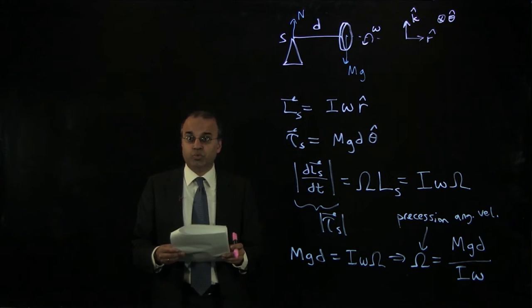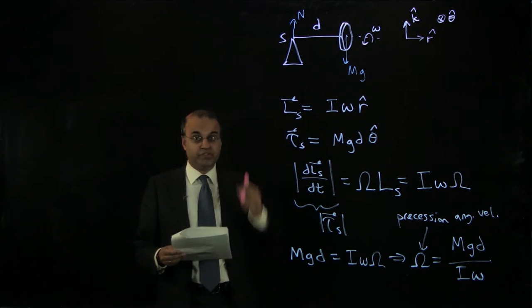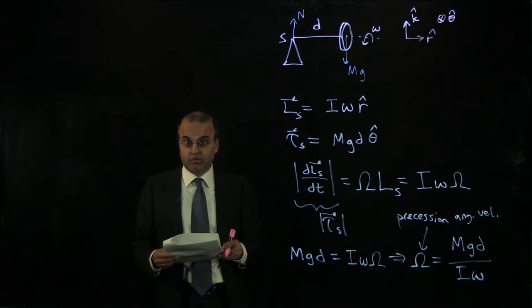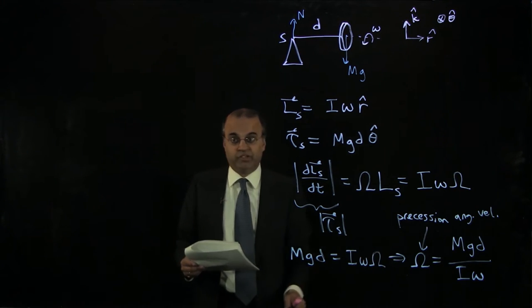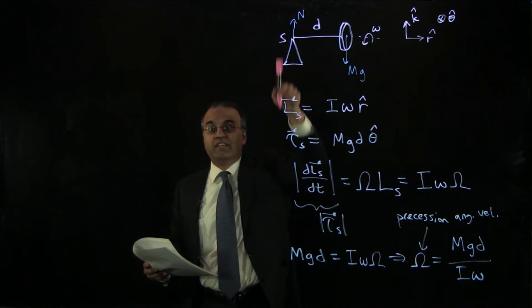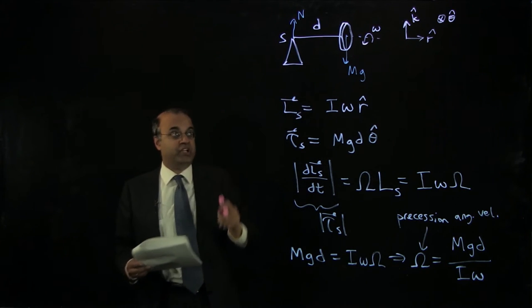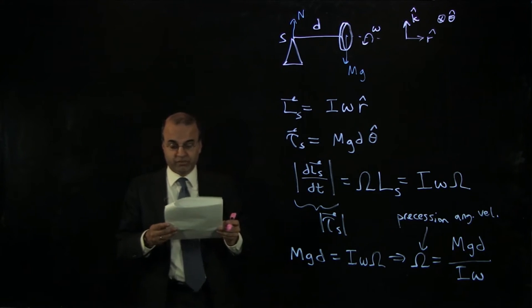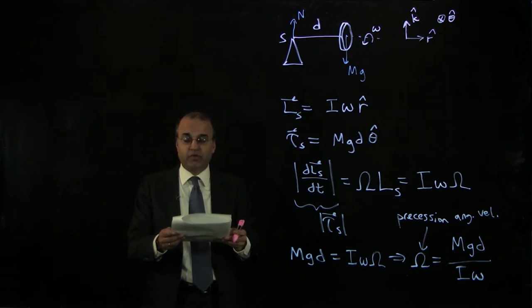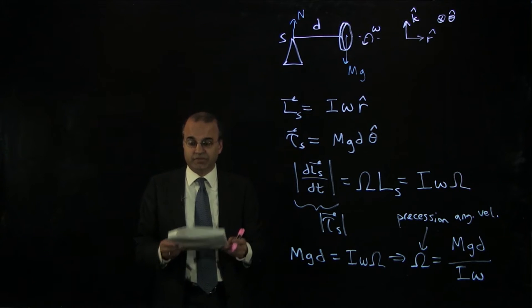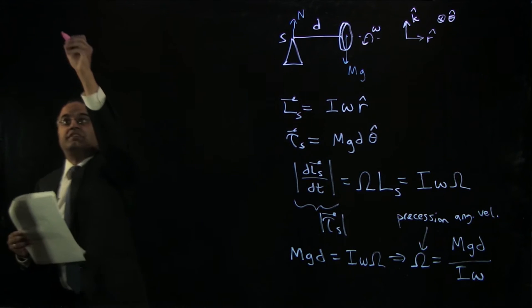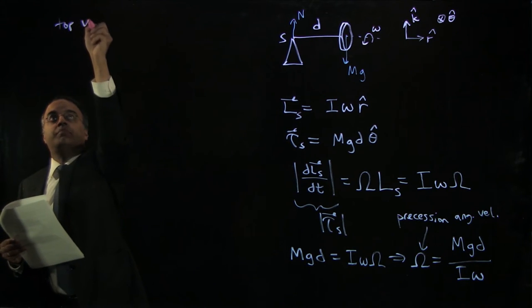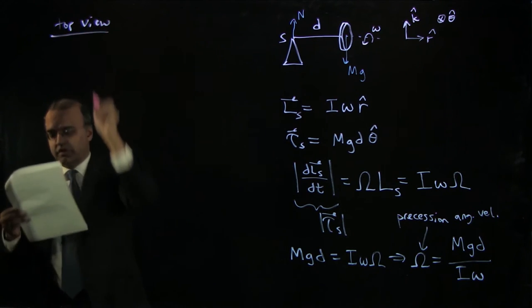This expression tells us what the magnitude of capital Omega is — the magnitude of that precessional angular velocity. But it doesn't tell us which way the system is precessing, whether viewed from the top the motion is clockwise or counterclockwise, or equivalently, which way the vector capital Omega is pointing. We know it must point along the vertical axis, but does it point upwards in the plus k hat direction or downwards in the minus k hat direction? To see that, we need to look at which way the angular momentum vector is rotating. So let's go to a top view of our gyroscope.